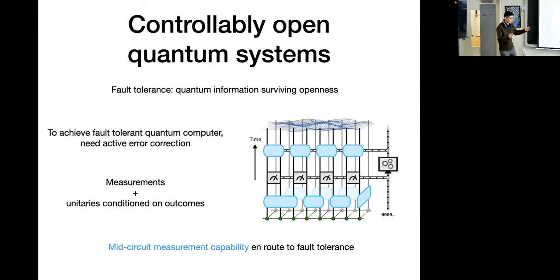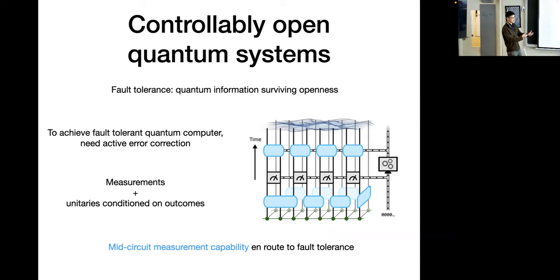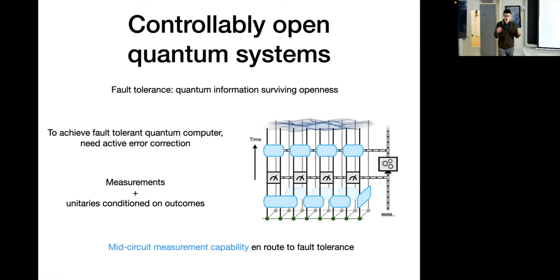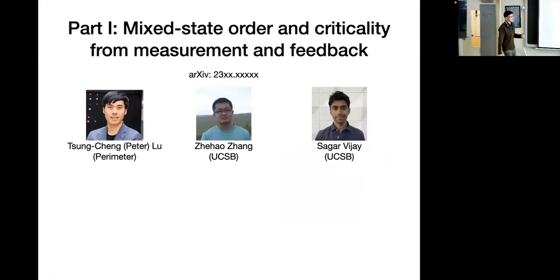Fault tolerance might still be several years away. However, it's one of the holy grails for quantum computing. Many of these quantum hardware platforms already have or are developing the capability to do what's called mid-circuit measurements — measurements along with unitaries that you don't just do at the end of a protocol, but can do dynamically. This begs the question: even before we reach full-fledged fault-tolerant quantum computing, can we use these types of operations in some interesting way to realize some interesting mixed states?